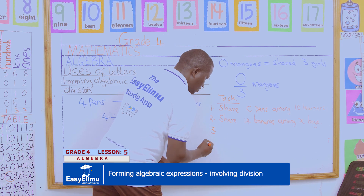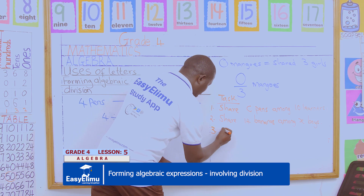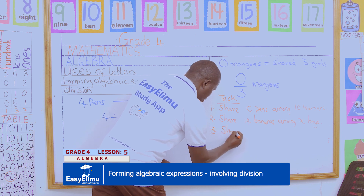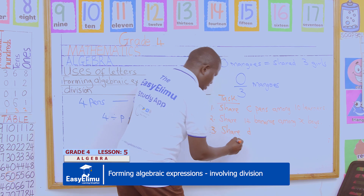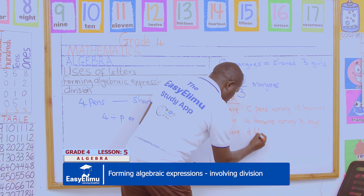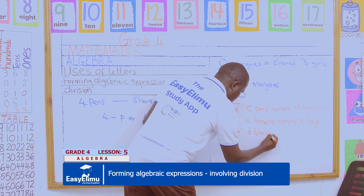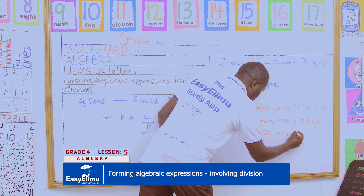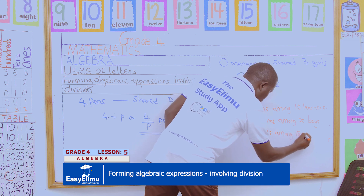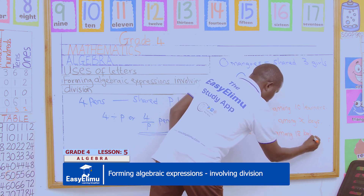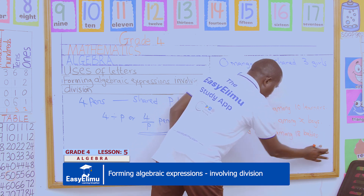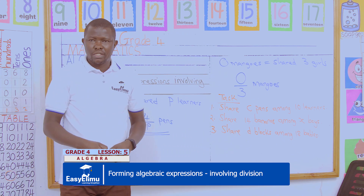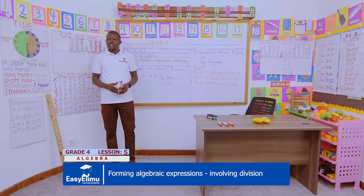The last and final task: Share d blocks among eighteen babies. Remember to do more practice.